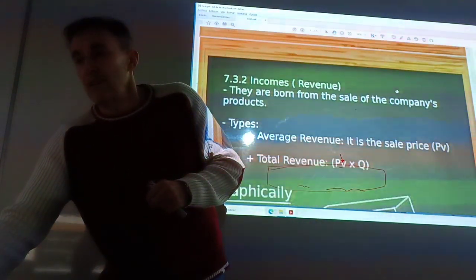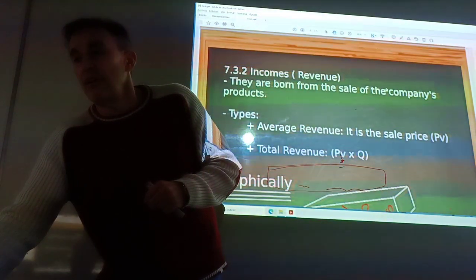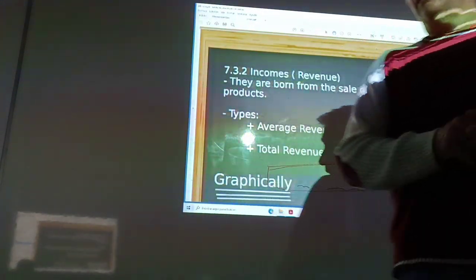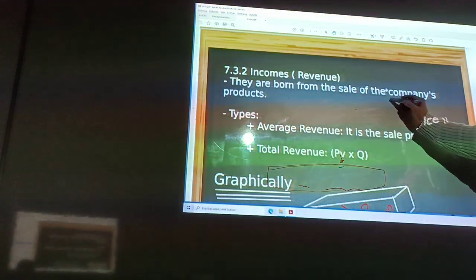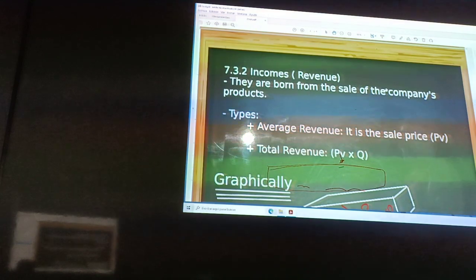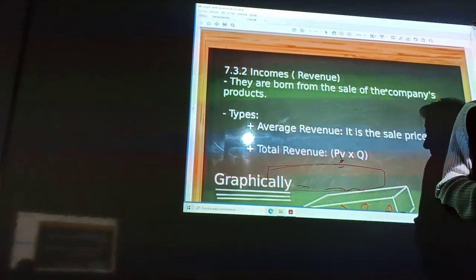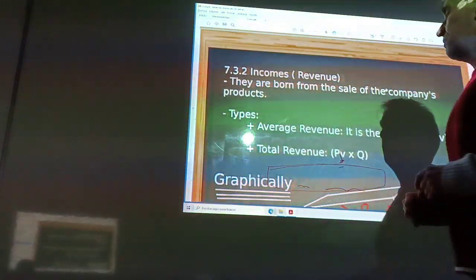Total cost is the fixed costs and variable costs. And finally, I showed you the income or revenue. They are grown from the sales of the companies produced in the goods and service markets. There are two types.